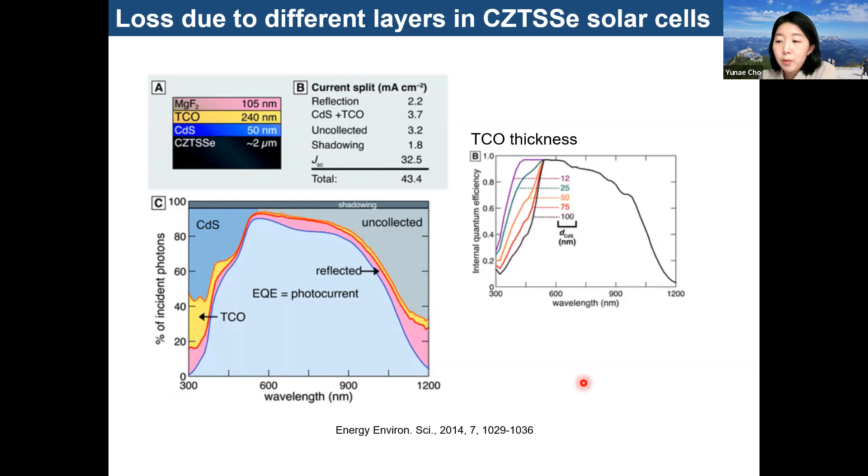And next, figure B, you can see the IQE loss by changing the TCO thickness evaluation. In this case, the light absorbed from the surface will be an indicator to see how much photo current is absorbed by the TCO layers according to the thickness.